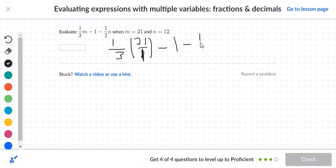Now we're going to say minus 1 half. Notice the n turns into 12, so we'll just say 12 over 1. When we multiply, we get 21 over 3 minus 1.